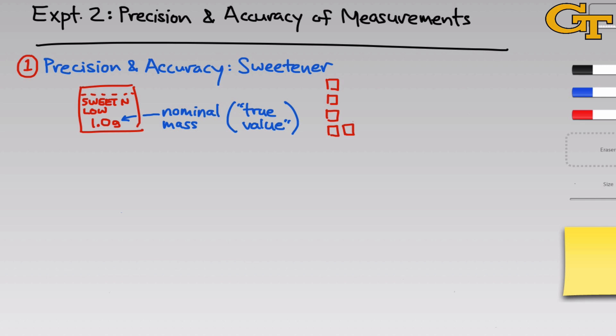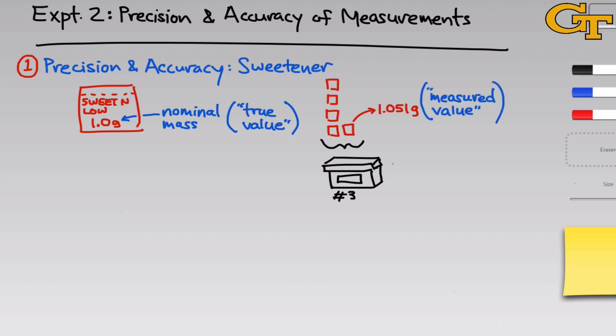In the first part of the experiment, we're going to take five packets of sweetener and an empty packet so that we can subtract out the mass of the paper used to contain the solid. We'll mass them on a single balance — let's say balance number three. From this, we'll get five masses of five different packets. Let's say one of them is 1.051 grams — this is the measured value. And indeed, that's not exactly 1.0 grams, just as suggested by the term nominal mass.